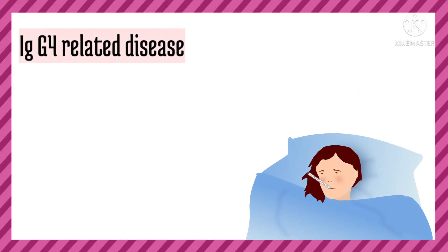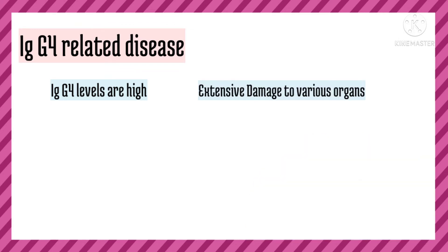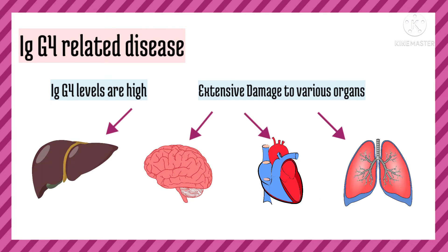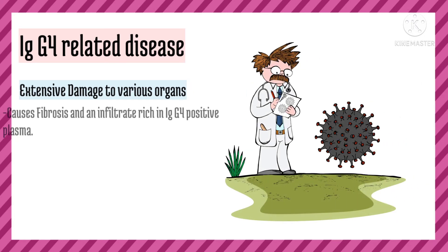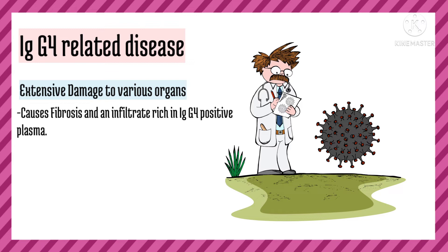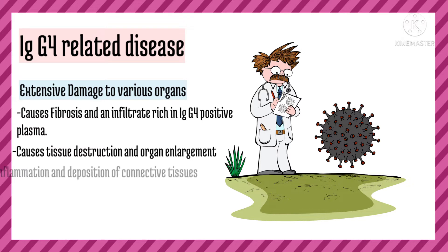In IgG4 related disease, the IgG4 levels become high due to unknown reasons, which leads to extensive damage to various organs as the immune system fights its own tissues. This causes fibrosis and an infiltrate rich in IgG4 positive plasma cells, as well as tissue destruction and organ enlargement with inflammation and deposition of connective tissues in the area of damage.